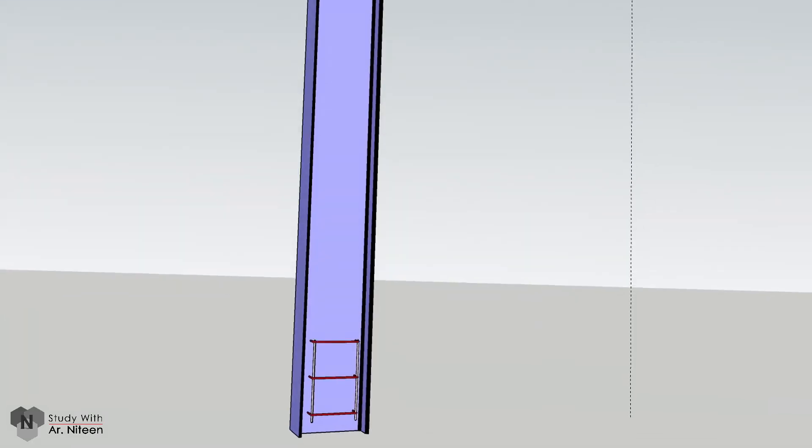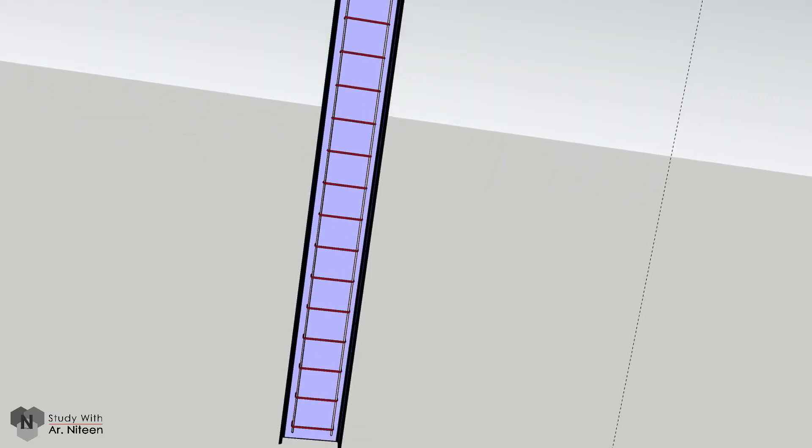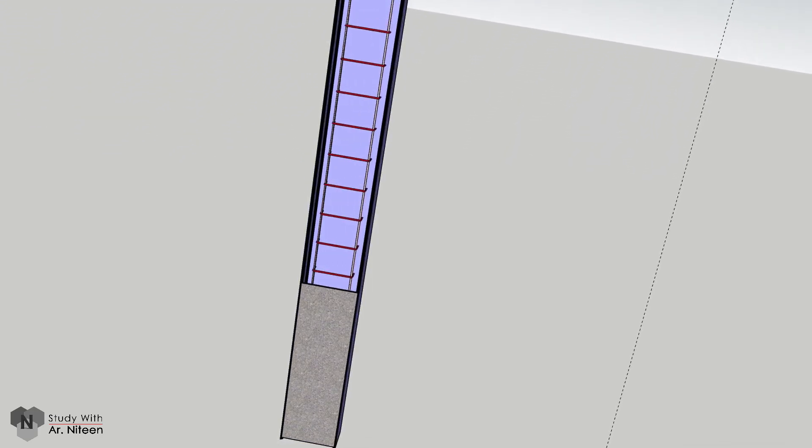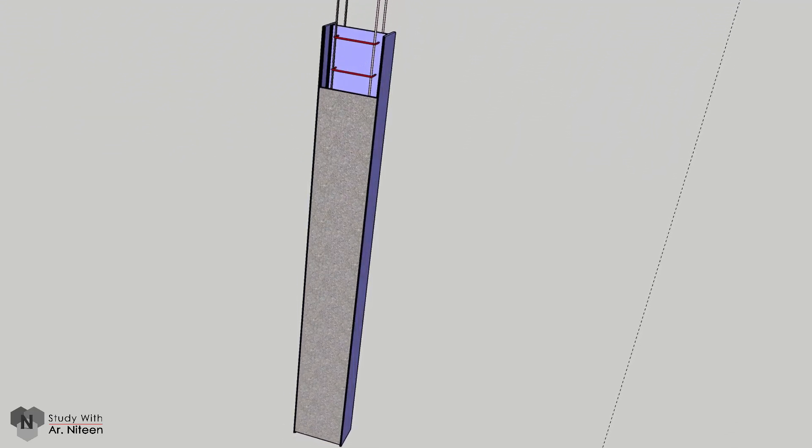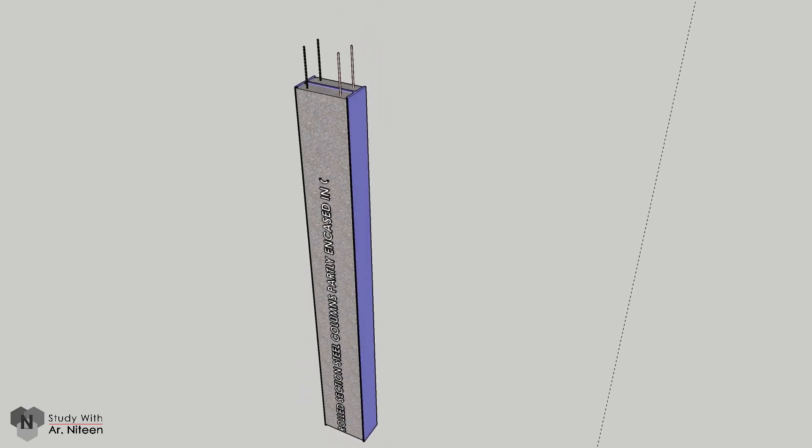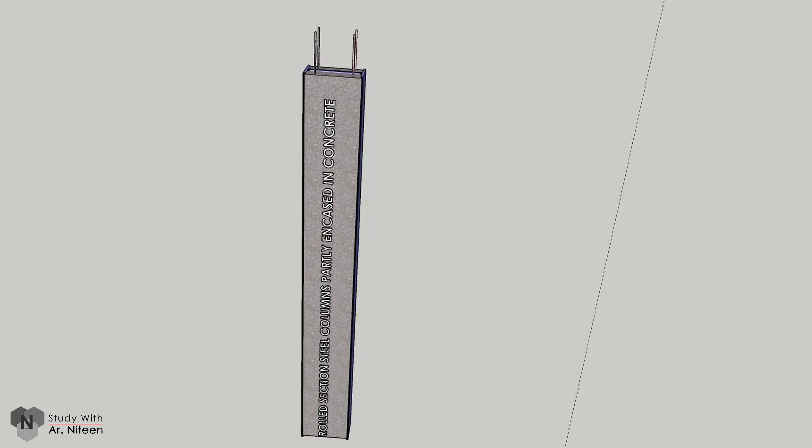Different types of composite columns are principally in use. Rolled section columns which are partially encased in the concrete. Reinforcement is used for concreting. Two sides of the rolled steel is exposed.